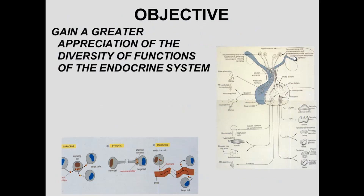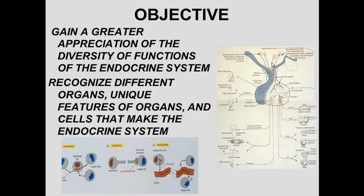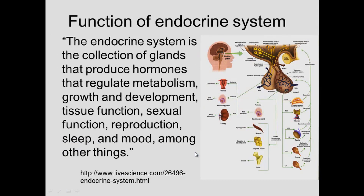The objective of today's presentation is to appreciate the diversity of functions of the endocrine system and to recognize the different organs and the unique features of organs and cells that make up the endocrine system. Here you can see a lot of that system — here's the pituitary, the hypothalamus is up in this region, and there's a reciprocal relationship between the pituitary and various organs of the body. The endocrine system is one by which hormones are produced by a cell, go into the bloodstream, and interact with cells with receptors that match that hormone at some target distant place.